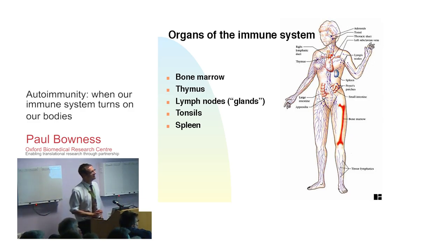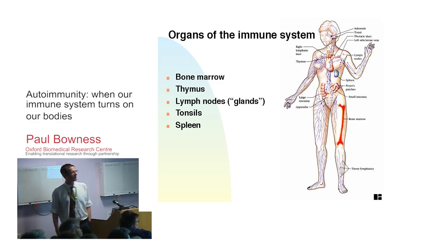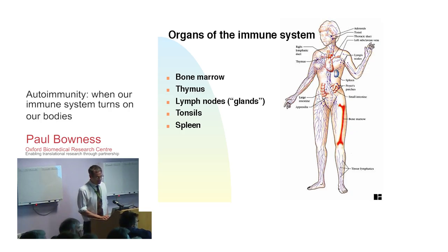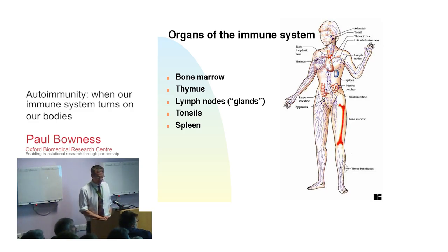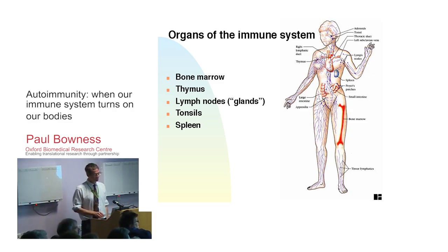When we think of the immune system, it's not like our heart - it's not just one organ. It actually has quite a number of organs. Our immune cells start off from our bone marrow, inside our femur bone. Some of the immune cells travel up to a gland called the thymus, which many of us don't even know we've got, which hangs up behind our heart. Then the cells of the immune system travel around the body - the lymph nodes, the spleen, and the tonsils are all organs of our immune system.